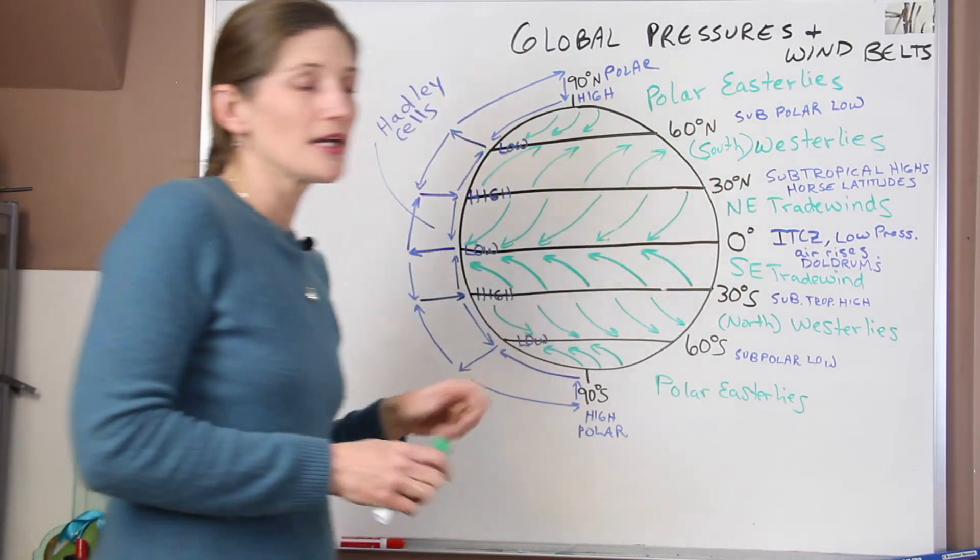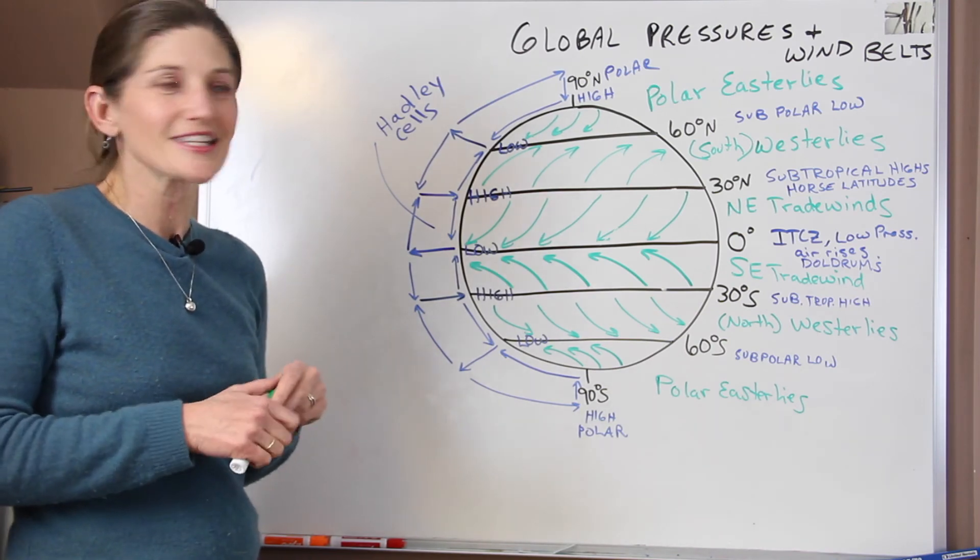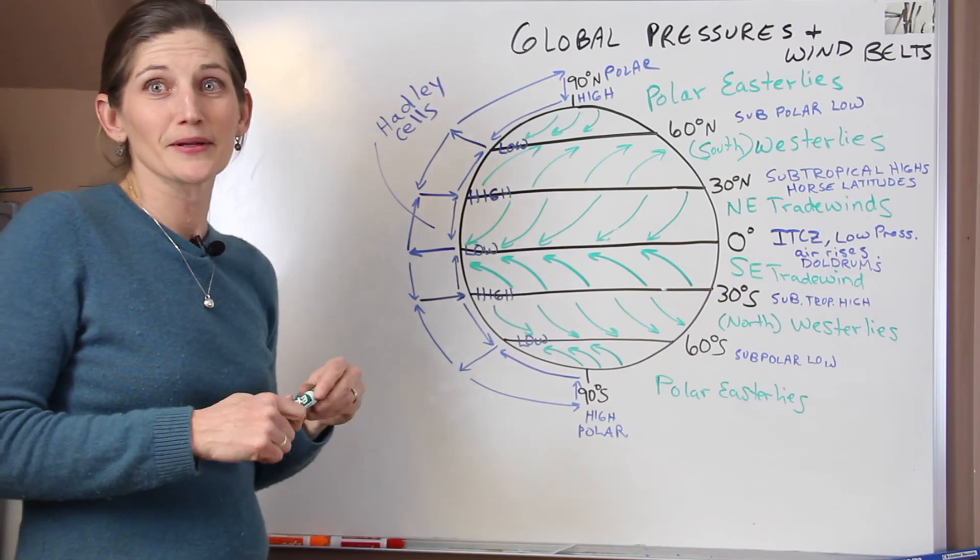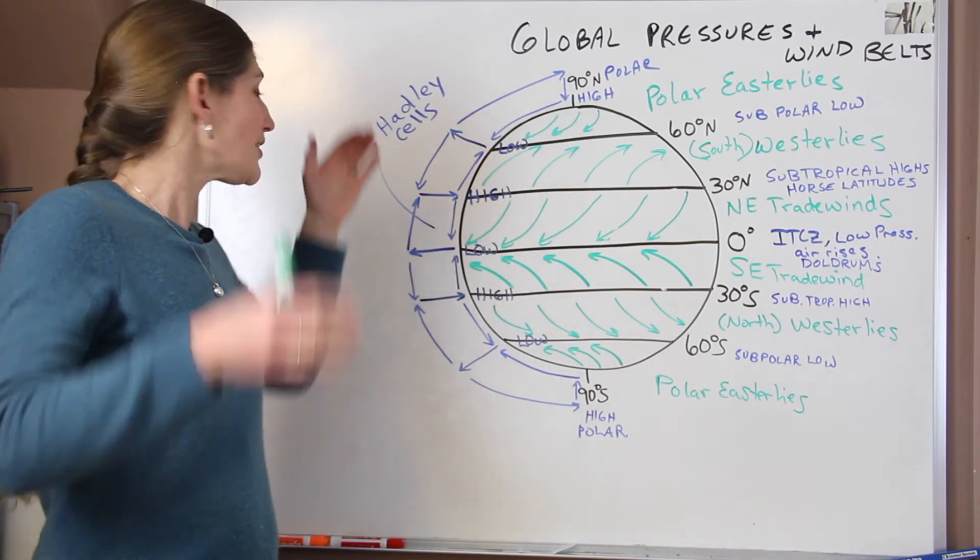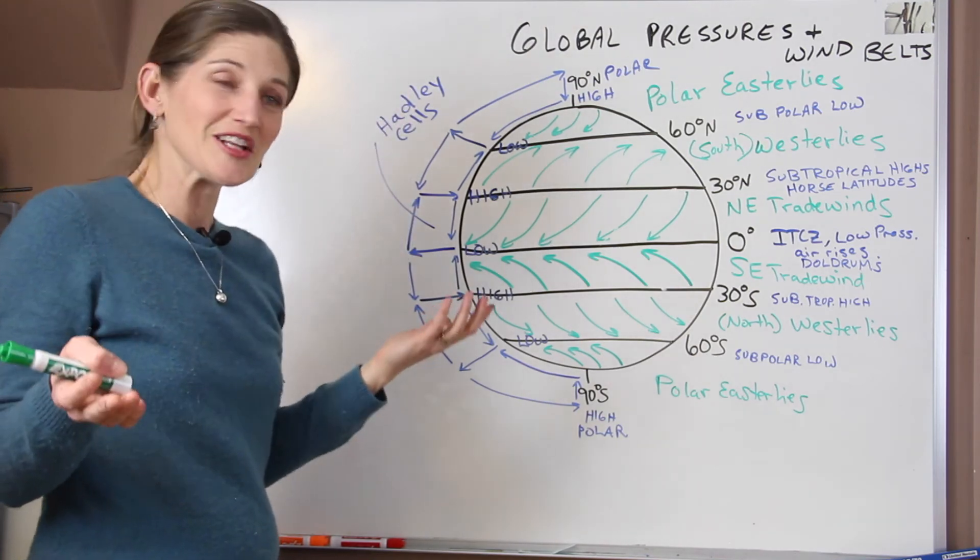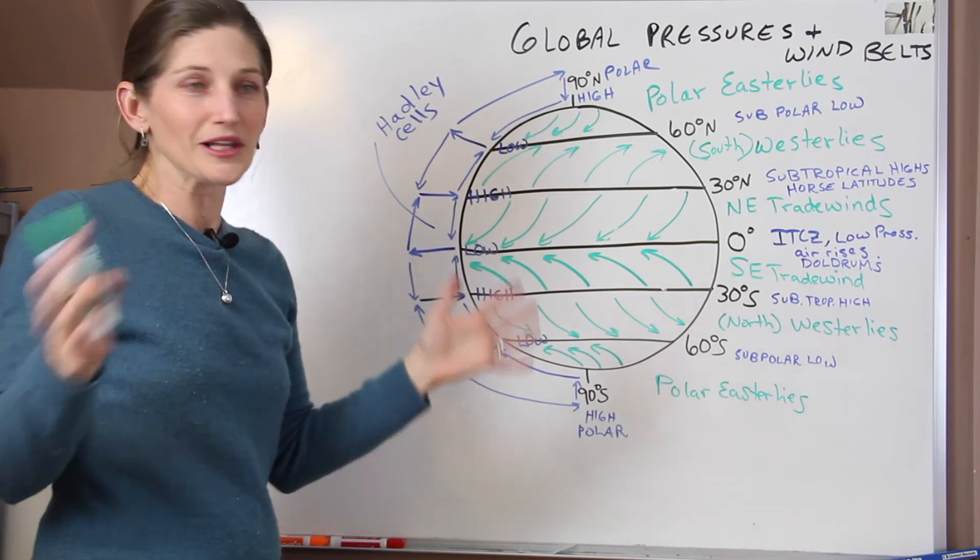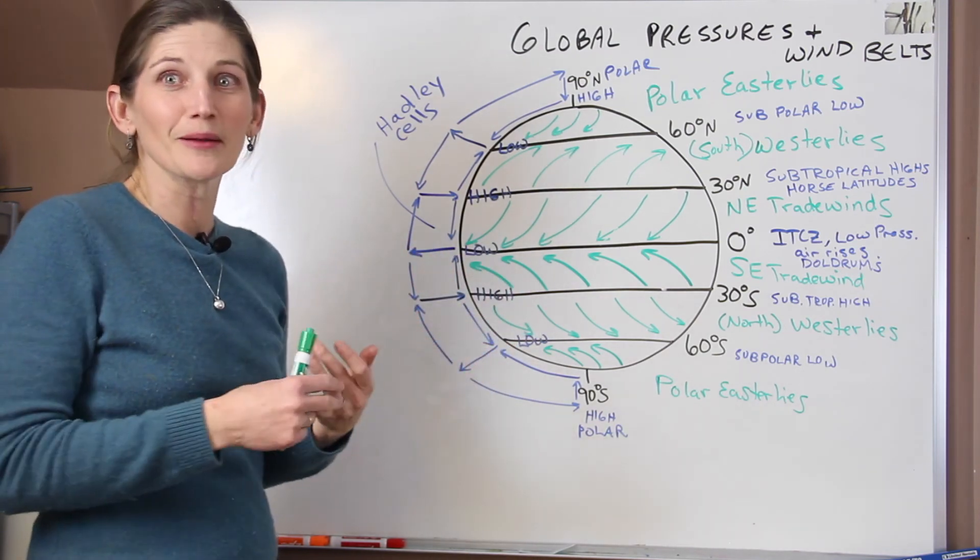Now the horse latitudes, this one I always found intriguing when I was young and learning about this. This is also a place you wouldn't want your ship to get caught because when you come here, the winds are coming down from above. It's nice. There's not a lot of storms. It'll be quite sunny, no clouds, but no consistent wind. And it could be a problem.